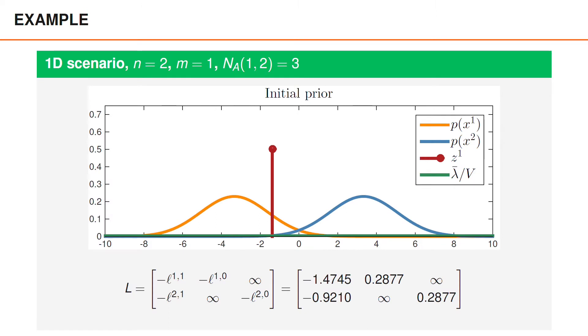Let's take an example with two objects and a single measurement, where we have three possible data associations. The prior densities are Gaussian, the clutter is uniform, and the likelihood is Gaussian. For this example, we get the cost matrix shown here.